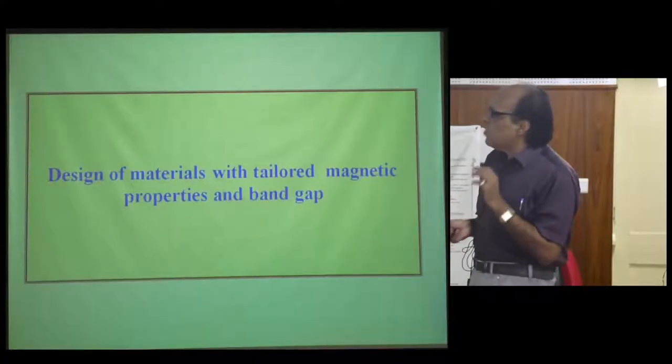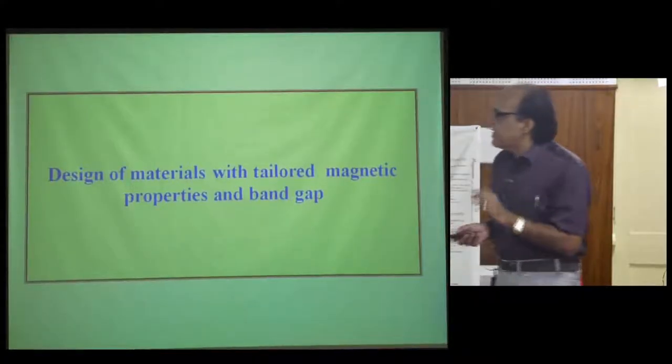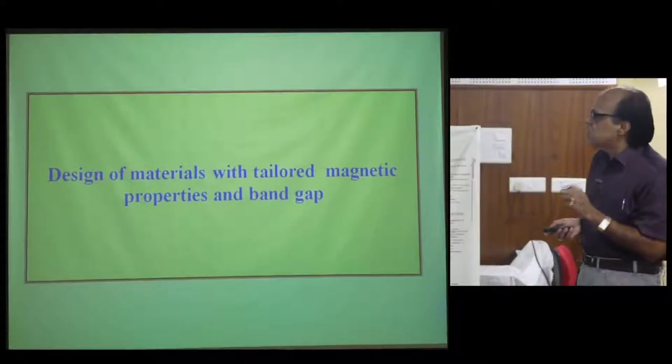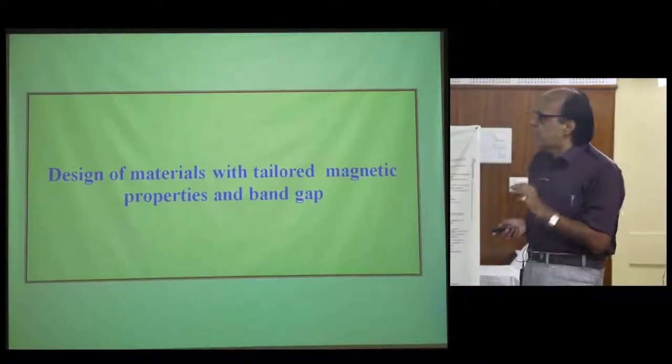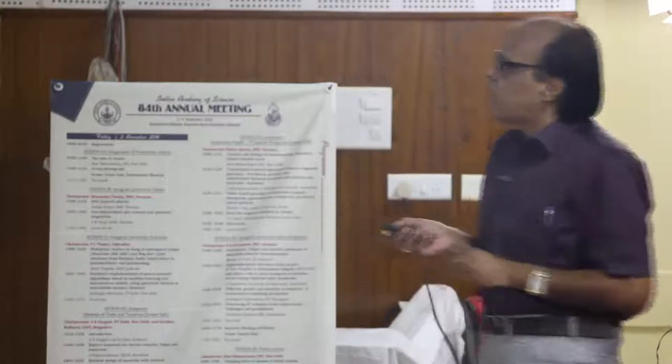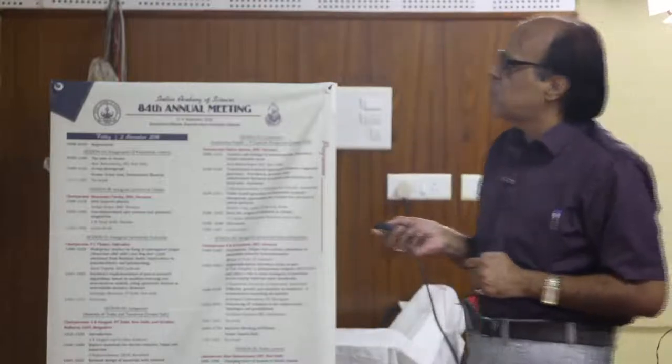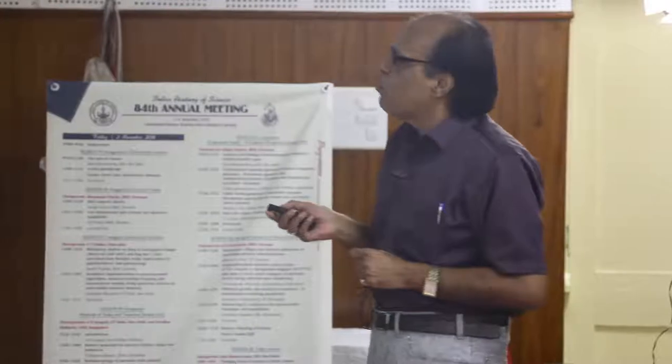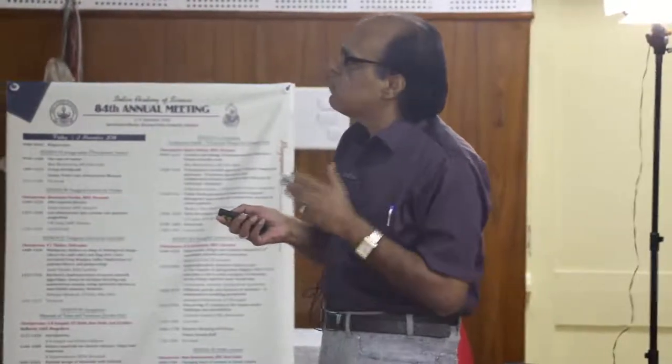Now, I show the first set of examples — the design of materials with tailored magnetic properties and band gap, especially to harness solar energy in a better way. Here I discuss some examples where we have synthesized compounds having cerium in the 3+ state. Why is it so difficult to make these compounds? Because cerium prefers the tetravalent 4+ oxidation state — that is its native state.